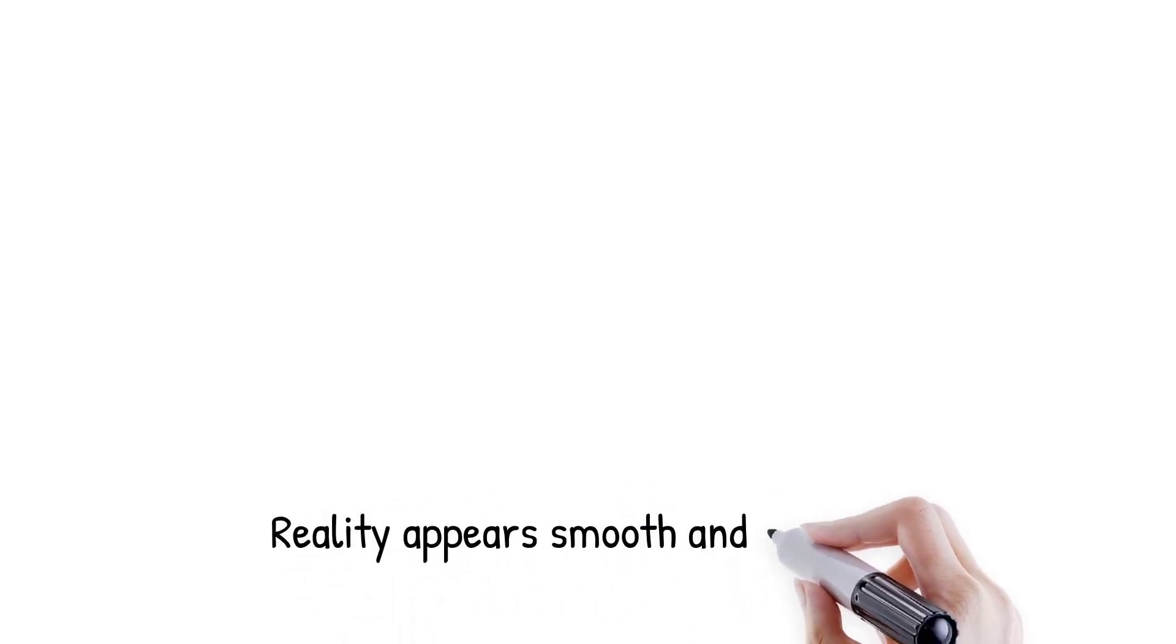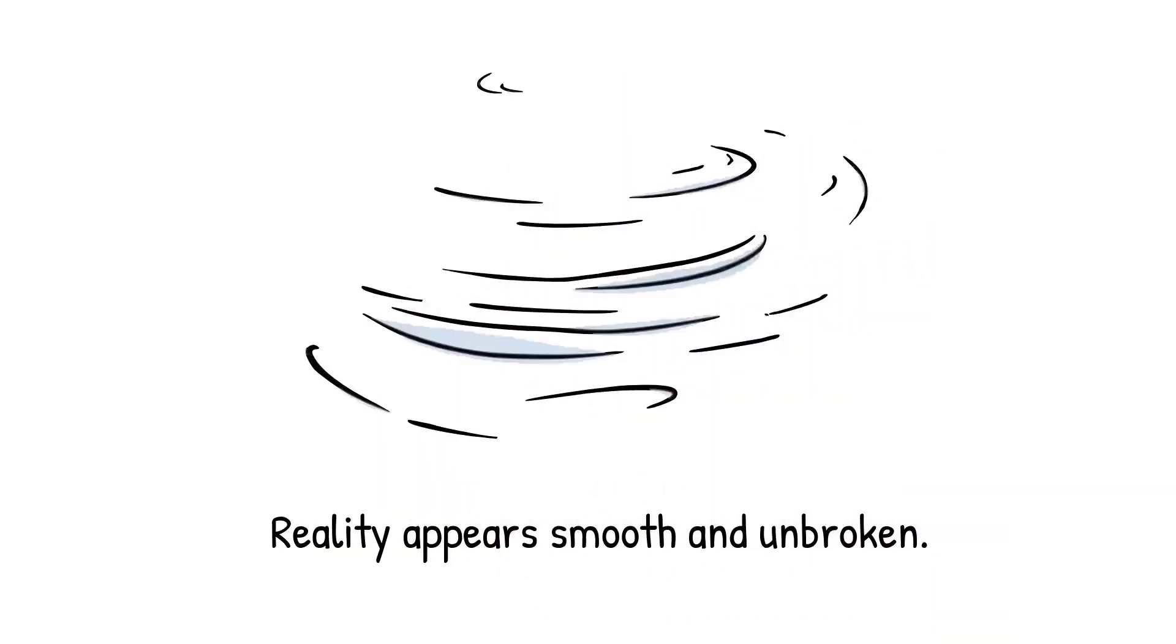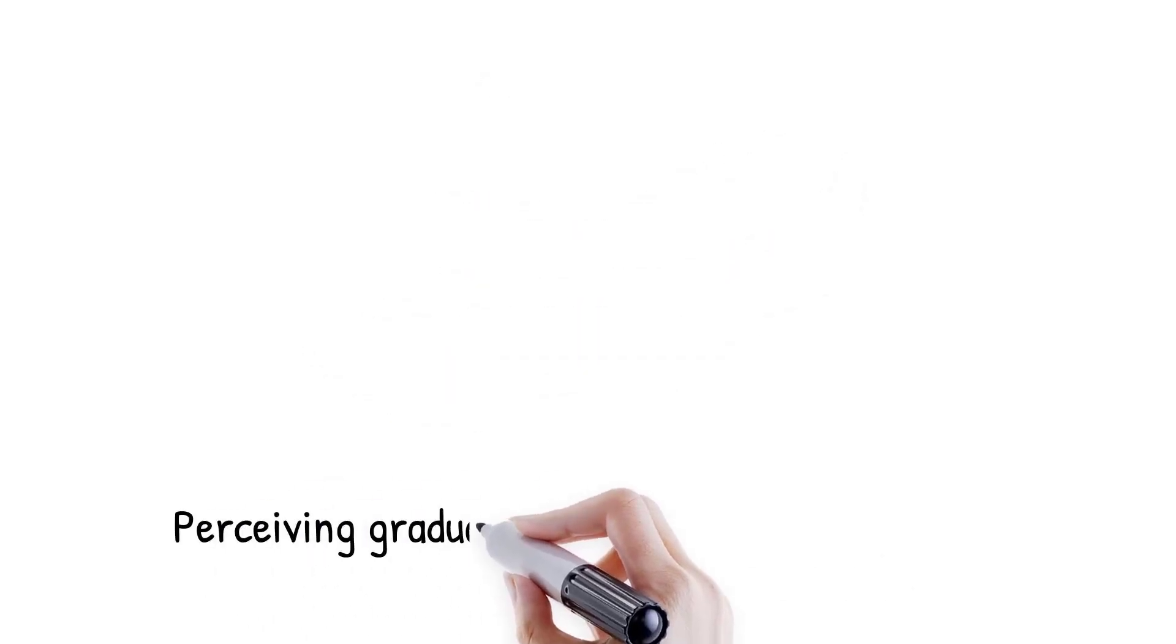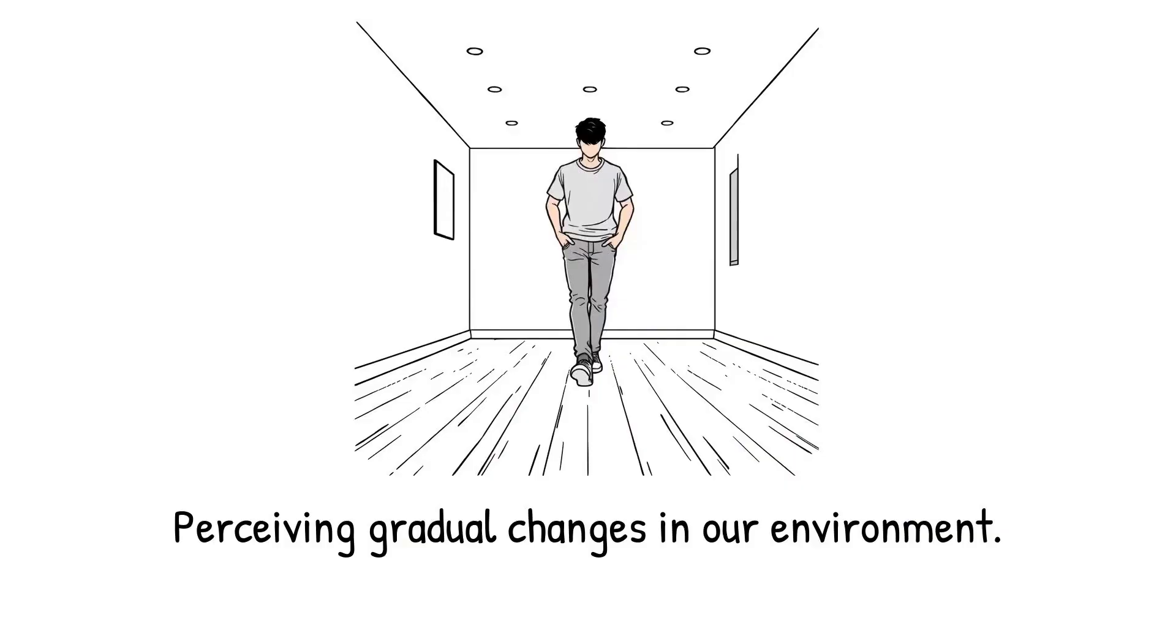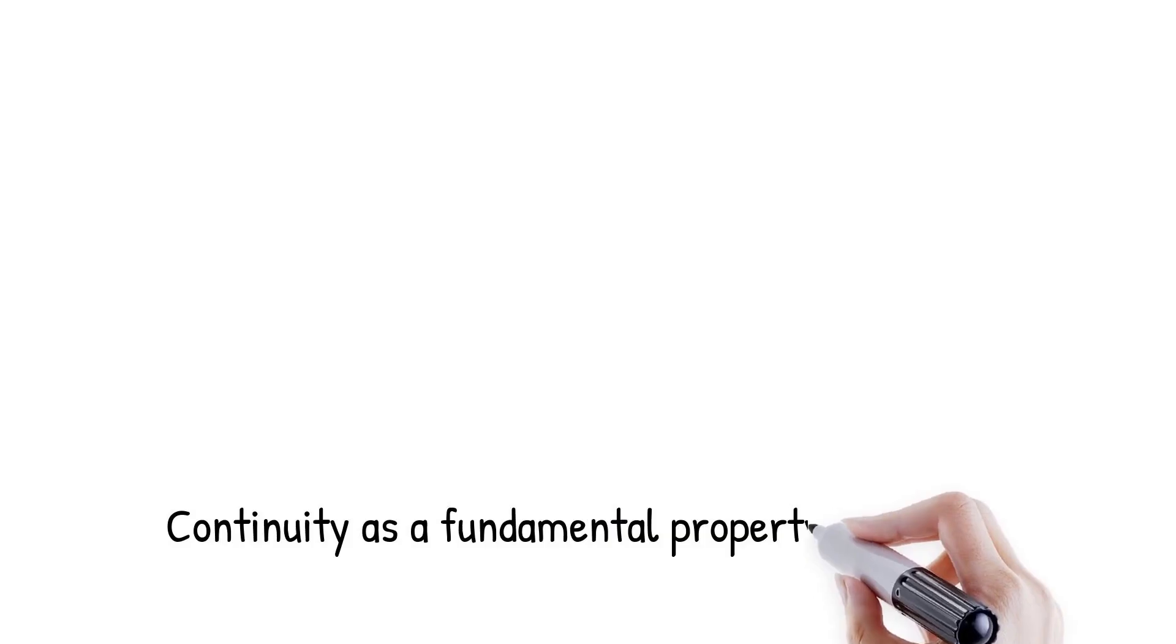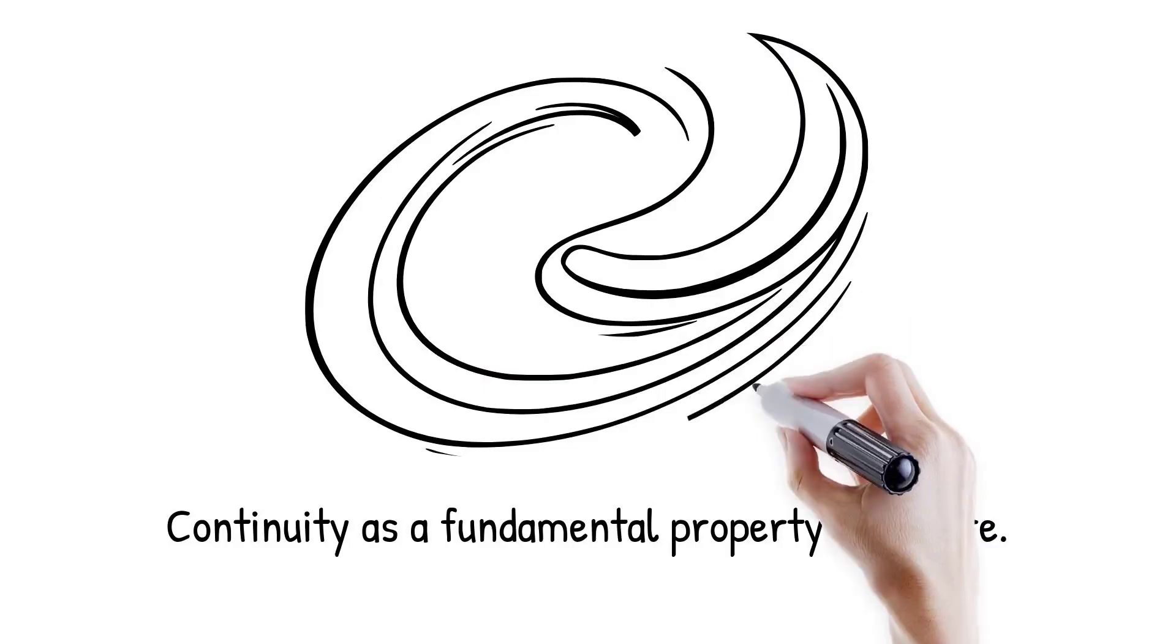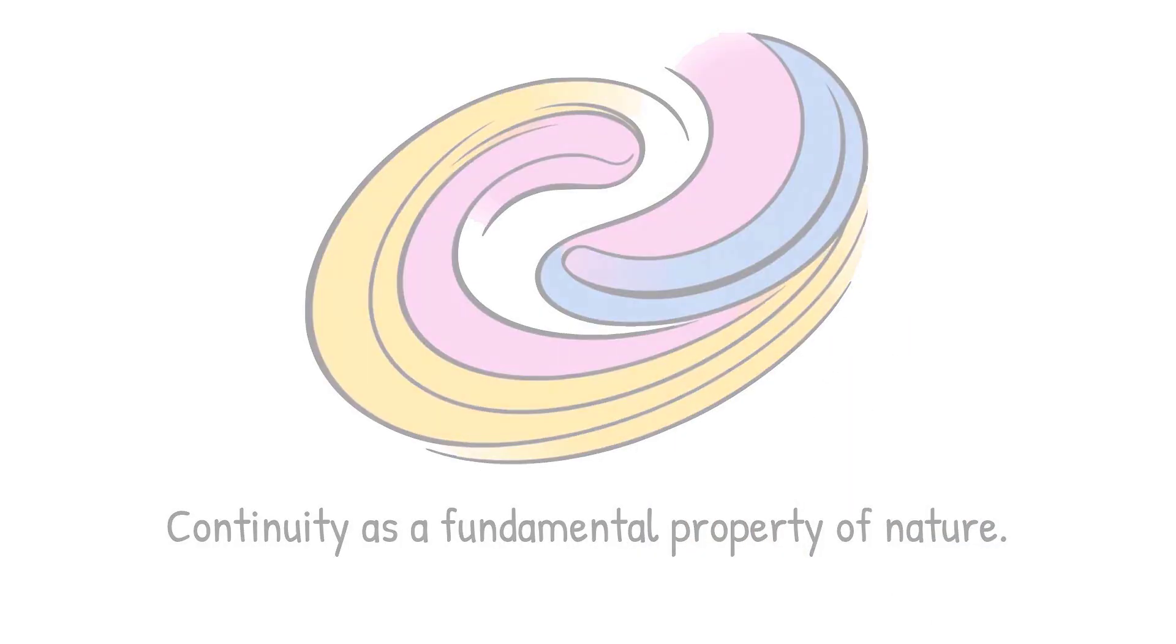At everyday scales, reality appears smooth and unbroken. Time flows like a continuous river, and space seems infinitely divisible. We walk across a room without noticing jumps or gaps in distance. Our senses are tuned to perceive change as gradual, not stepwise. This creates the impression that continuity is a fundamental property of nature. Classical physics reinforced this view, describing motion and space with continuous variables.